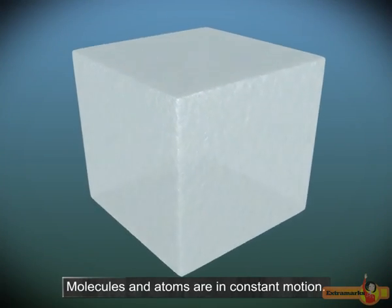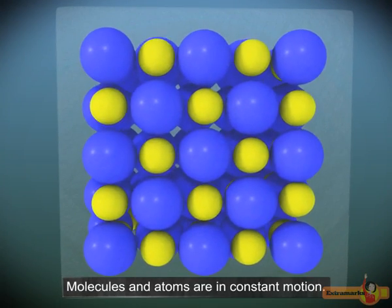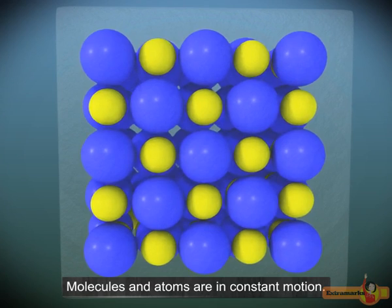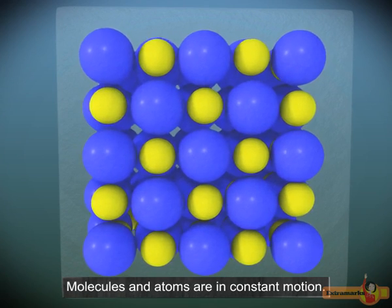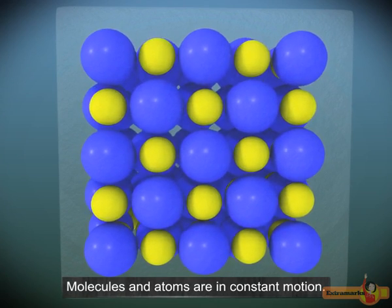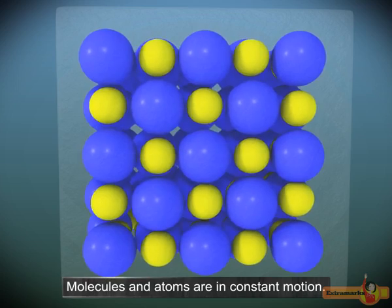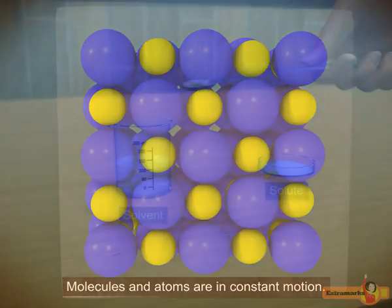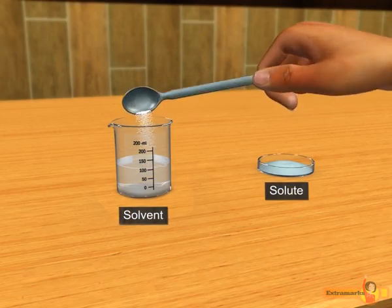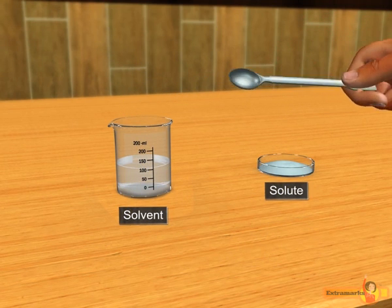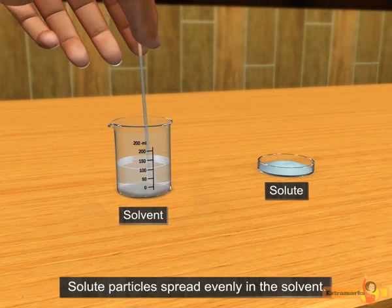According to the particle theory, matter is made up of tiny particles that are in constant motion. These particles are atoms or molecules. When a solute dissolves in a solvent, the particles of solute get separated and spread out evenly in the solvent.